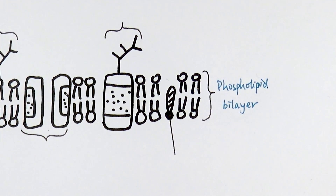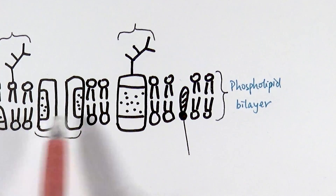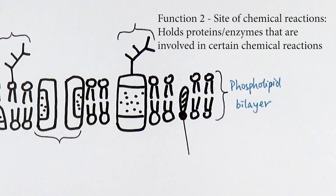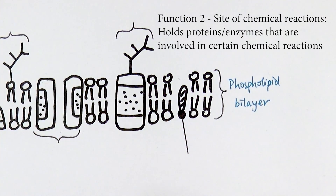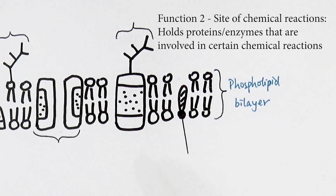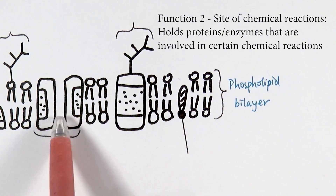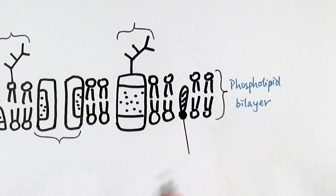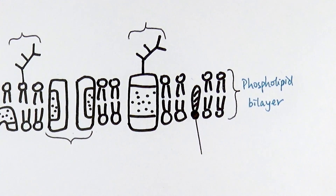Extending on that, there are certain different structures on the membrane itself, and the proteins or components on the membrane are crucial in doing certain chemical reactions. In the case of mitochondria and chloroplasts, a lot of the enzymes crucial for photosynthesis and respiration exist on the membrane rather than inside these organelles. So the membrane also serves as a site where proteins exist to carry out chemical reactions.